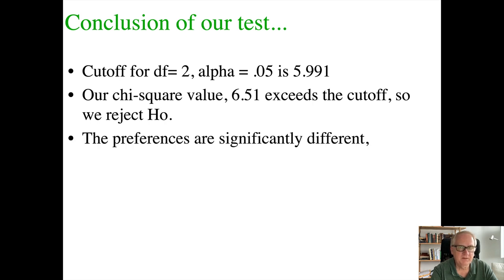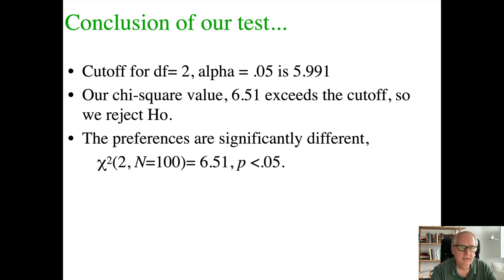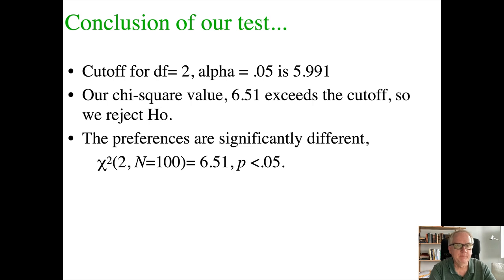We can say that these preferences are significantly different — that Coke is liked more than Pepsi, which is liked more than L&P. In APA style: the preferences are significantly different, χ²(2, N = 100) = 6.51, p < 0.05. A convention is to include the sample size N in the brackets because degrees of freedom only reflects the number of categories, not sample size. The alpha of 0.05 was our cutoff, so we report p < 0.05.